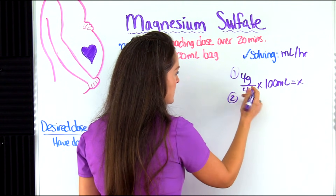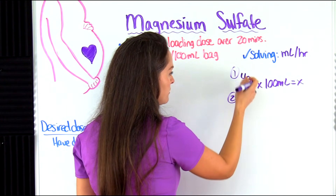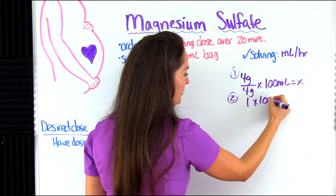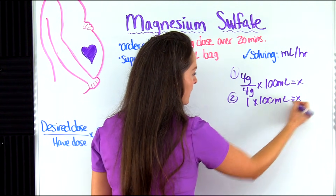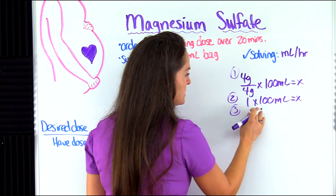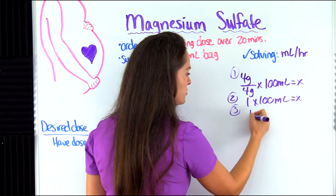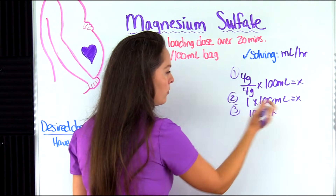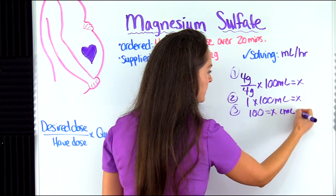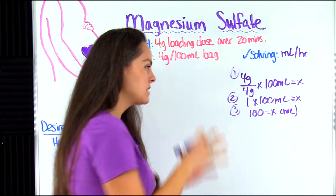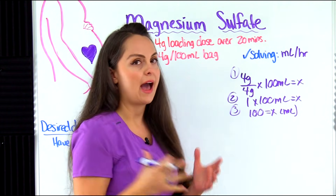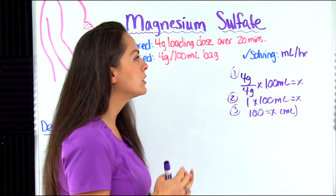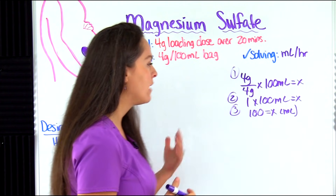Our next step is to divide four divided by four, which gives us one. Then step three: one times 100 gives us 100. So 100 equals X. What does this represent? This represents our milliliters — the volume that has to go in is 100 milliliters. But I need to solve for milliliters per hour, so I need to know the flow rate. We have to do another step.